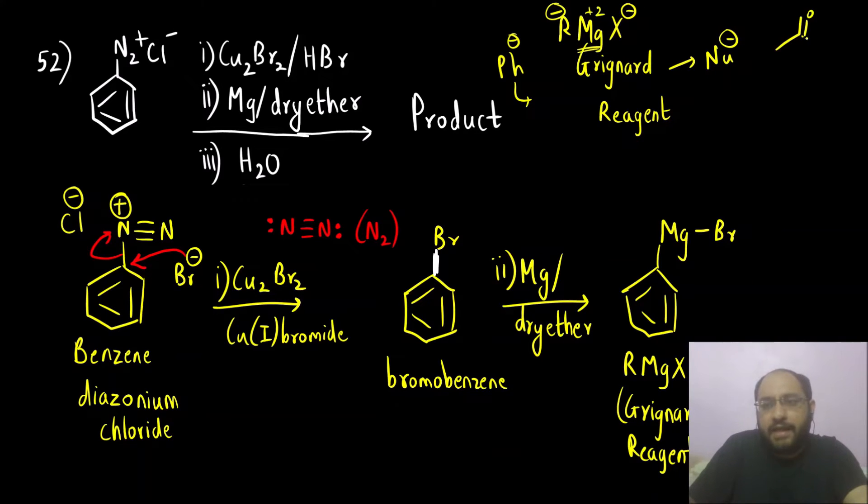Nucleophile means it can attack an electron deficient species like aldehyde or ketone to form alcohol. It will attack like this. We can get secondary or tertiary alcohol. This was Grignard reagent acting as a nucleophile.